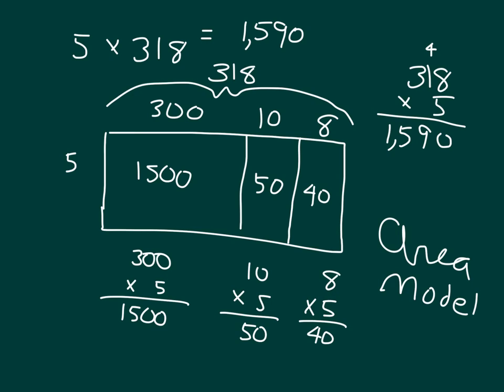If we were to show this with the distributive property, that would be five times, and we broke it apart, times three hundred, plus ten, plus eight. Where it is that we would distribute five times three hundred, five times ten, and five times eight.